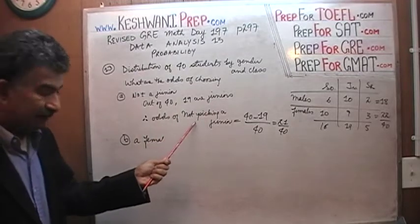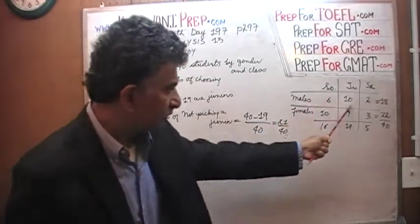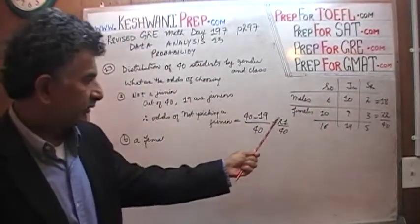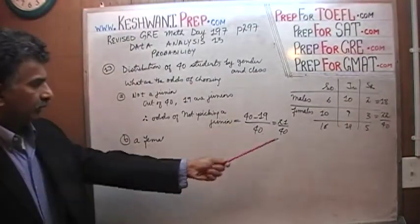Therefore, the odds of taking somebody who is not a junior is simply 40 minus the 19, which is the number of juniors, divided by the total number, which is 21 over 40. Very simple, very straightforward. 21 over 40.